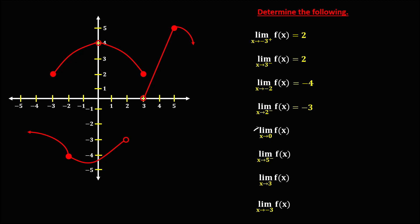Then for this limit, the limit of f of x as x approaches negative 3. For this limit, x is equal to negative 3, and the limit is equal to negative 4.